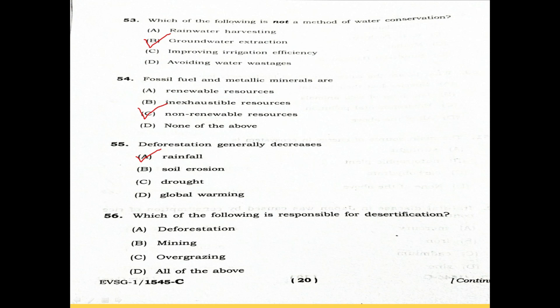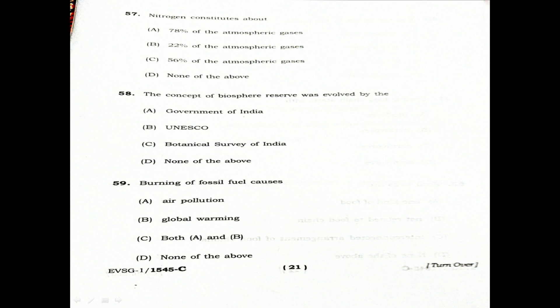Question 56: Which of the following is responsible for desertification? Also: Nitrogen constitutes about what percentage of the atmospheric gases? Option A: 78% of the atmospheric gases. Option B: 22% of the water conservation. Option C: 56% of the atmospheric gases. Option D: None of the above. Option A is the correct answer.